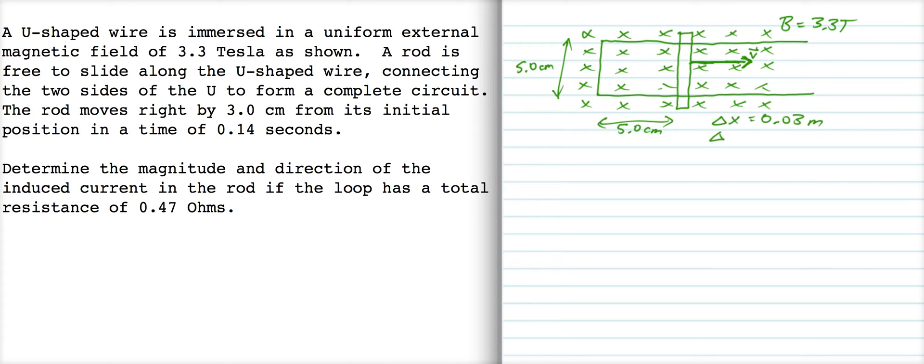And the time it takes is 0.14 seconds. And finally we're told that the loop has a resistance of 0.47 ohms. And we want to know the magnitude and direction of the current in the rod.